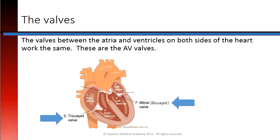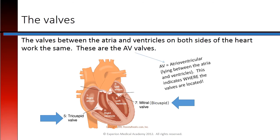The valves between the atria and ventricles on both sides of the heart work the same. These are called the AV valves. AV means atrioventricular, or lying between the atria and ventricles. This indicates where the valves are located.